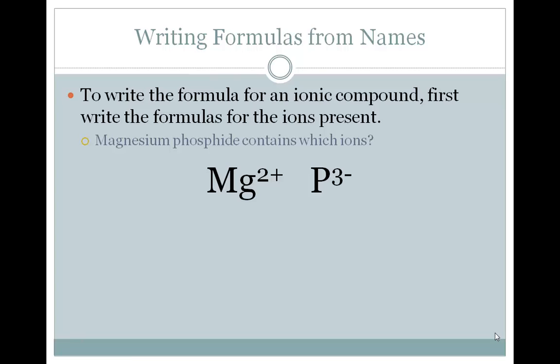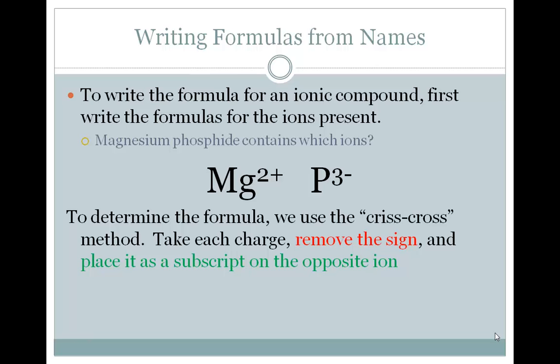In order to figure out how these come together to form a neutral compound, we use the criss-cross method. We take each charge, remove the sign, so no positives or negatives anymore, and then we place it as a subscript on the opposite ion. So that 2 is going to go down to be a subscript on P, and the 3 is going to go down to be a subscript on Mg. So we end up with the formula Mg3P2.